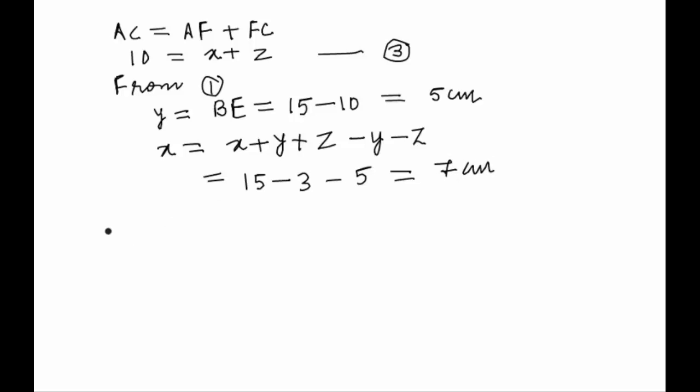Thus we have got all the values where CF, which was equal to z, came out to be equal to 3 centimeters. BE, which was y, came out to be equal to 5 centimeters. And AD, equal to x, came out to be equal to 7 centimeters. This is the solution to our problem.